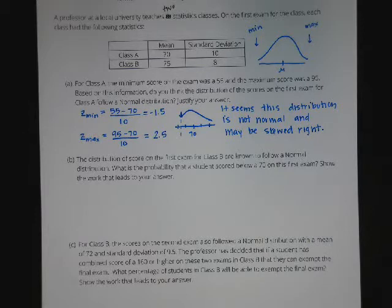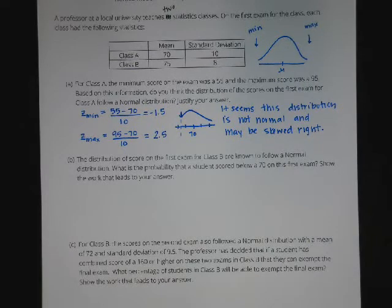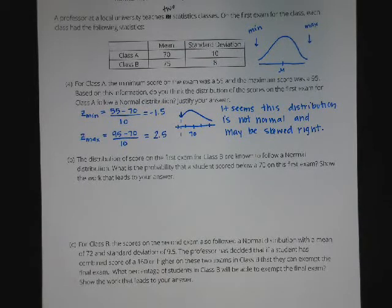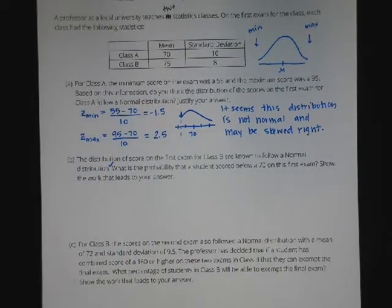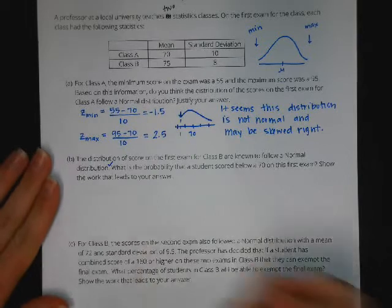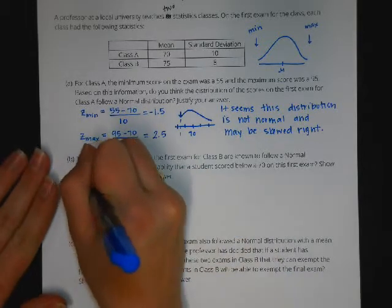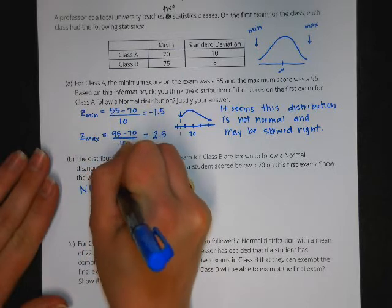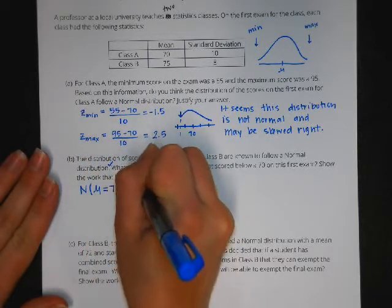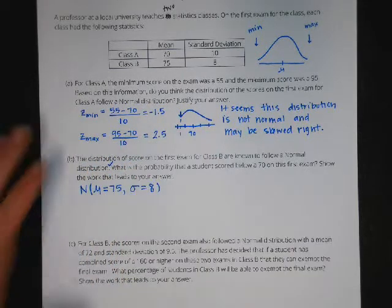On part B, the distribution of scores on the first exam for Class B are known to follow a normal distribution. What's the probability that a student scored below 70 on this first exam? Show the work that leads to your answer. So I know that this distribution is normal for Class B with a mean of 75 and a standard deviation of 8.